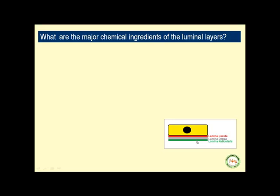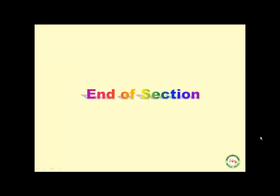The two important chemical ingredients of the laminal layers are collagen type 4 and heparan sulfate, which is a GAG — glycosaminoglycan.